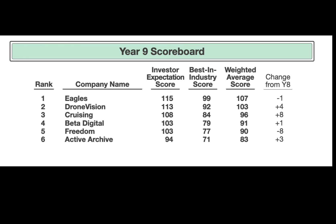Team D gained four points — nice — at 103. Normally if you gain four and you're at 103, you're winning the simulation; it just shows how stiff the competition is this semester. Team C is at 96 and gained eight — fantastic. Team B gained one; they're moving in the right direction. Team F dropped eight, but some decisions pay off in the long term — you're being strategic, and you could drop points and still be fine in the long run. They're at 90, so I'm fine with Team F. And Team A — thankful they did gain three, or I would be worried for them. They're at 83, which is respectable. But if they have any hopes of shooting for first place, they really need to get going.